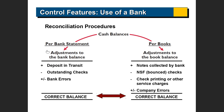You have to adjust both numbers. Anything that you added but the bank did not — that happened in that period — you add it to the bank's balance. Anything that you subtracted but the bank did not, you subtract it from the bank statement balance. Anything the bank added that you did not, you add to your books. Anything the bank subtracted that you did not, you subtract from your books. If you do all this, the ending balance for both the bank and the books will be the same.